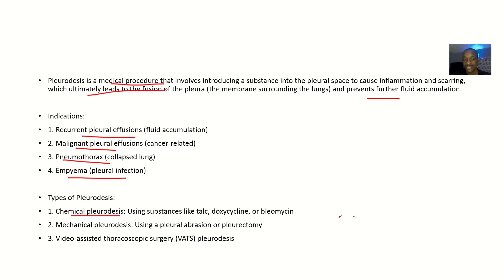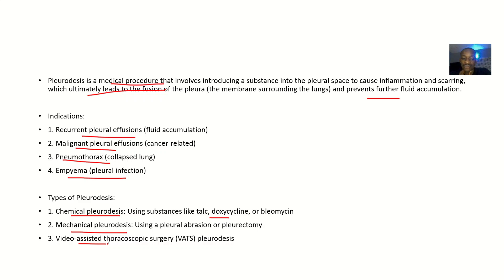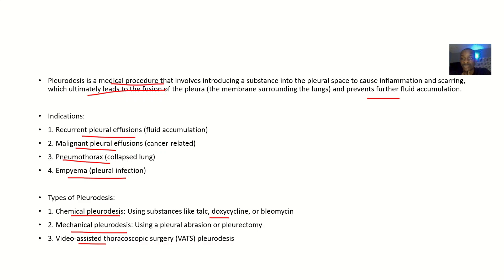There are different types of pleurodesis. Chemical pleurodesis uses agents such as talc, doxycycline, or bleomycin. Mechanical pleurodesis involves pleural abrasion or pleurectomy. You can also perform video-assisted thoracoscopic surgery pleurodesis.